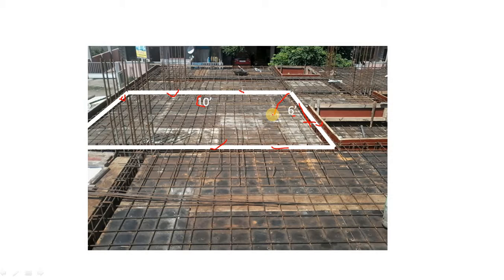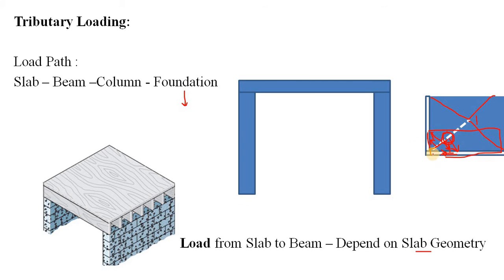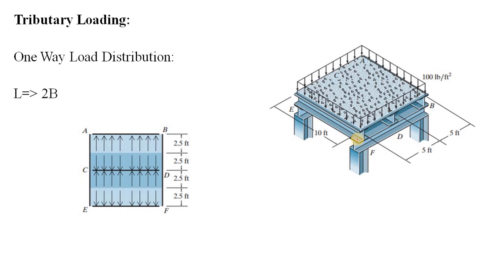In this video we will focus on slab-to-beam load transfer only. We will discuss the load transfer of this slab panel at the end of the video after understanding the basic concepts of one-way and two-way slab load distribution. For a one-way slab, the beams tend to take all the load equally. You can imagine a 45-degree angle line dividing the slab, and based on that, the load goes to your beam.